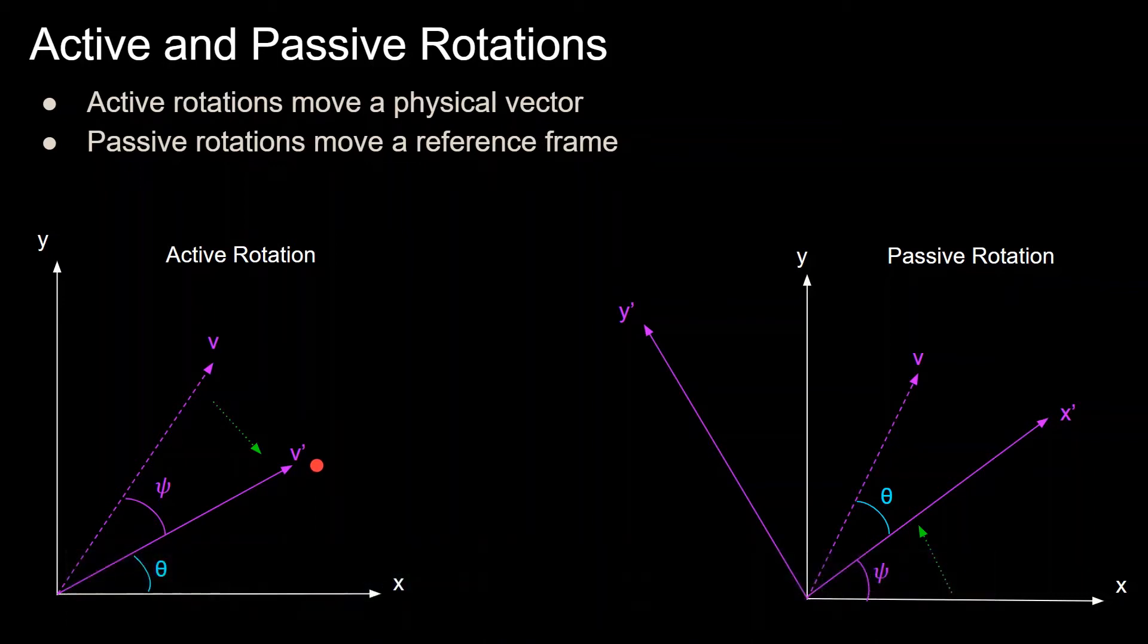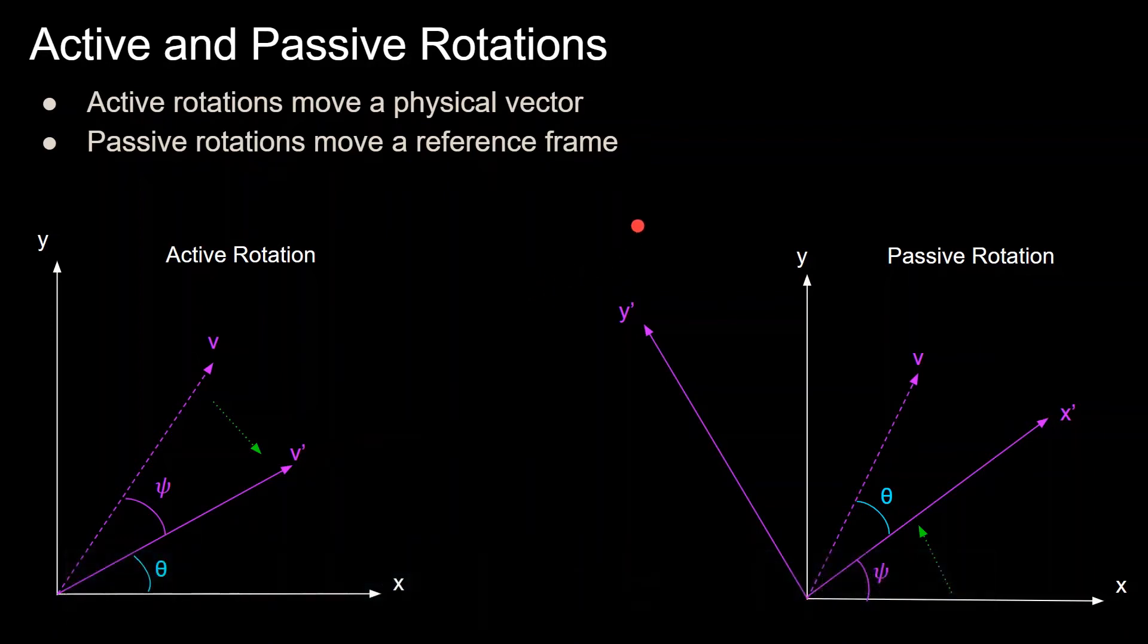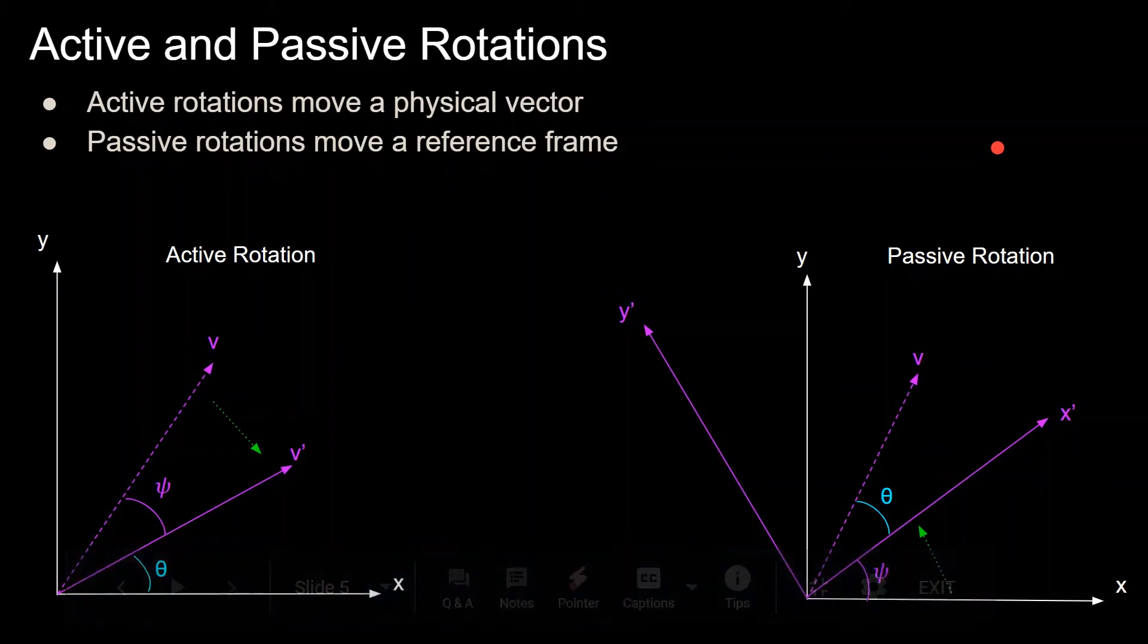And now here take note of the angle theta, which describes the angle between the reference frame x-axis and the new rotated vector v prime. So that angle down there. And on the right is a passive rotation, where the reference frame is rotated by the angle psi, and the vector v doesn't move. So in the x, y frame here, it is rotated upward to get to x prime and y prime by some angle psi. And again here, take note of the angle theta, which describes the angle between the rotated reference frame x-axis and the vector v. Note that an angle theta is equal in both cases.